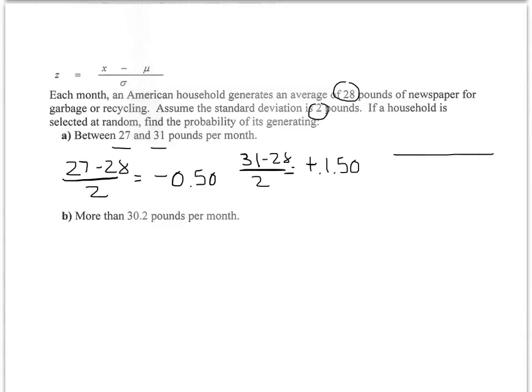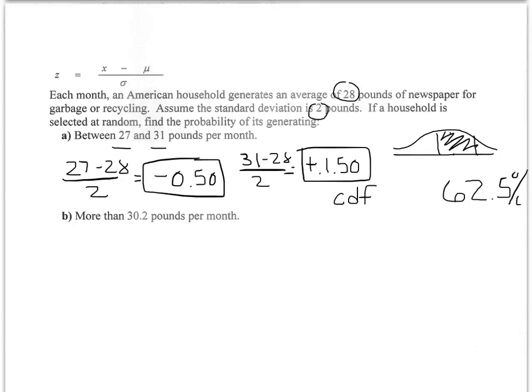When I go to draw this, that would be my 28 in the middle. We're slightly below it, slightly above it, so I'm looking at the values that are in between. This would be a CDF, my minimum, my maximum, and when I convert it to a percentage, 62.5 percent.